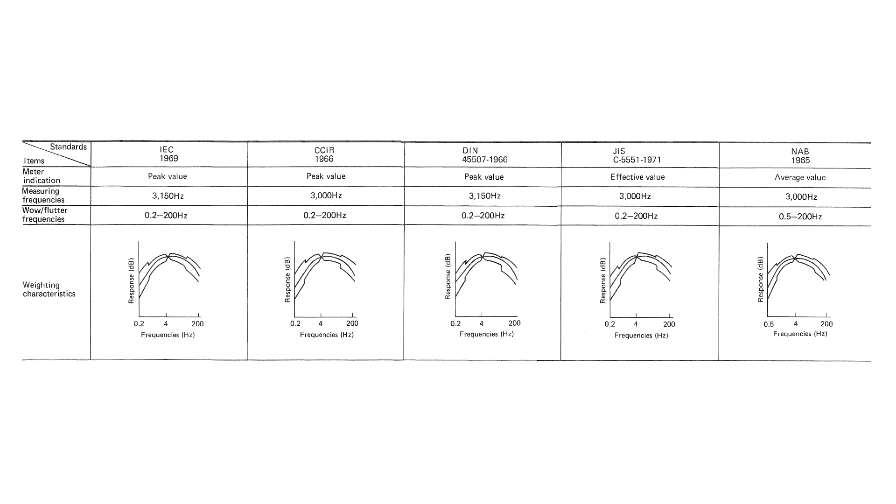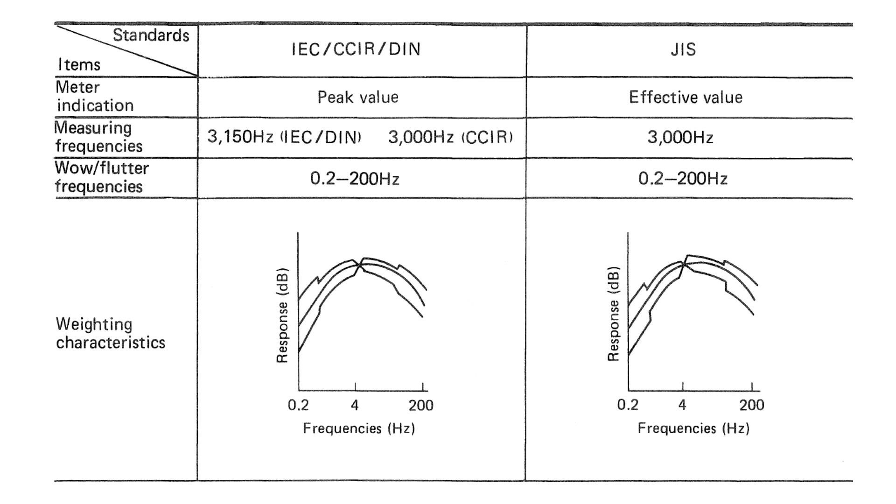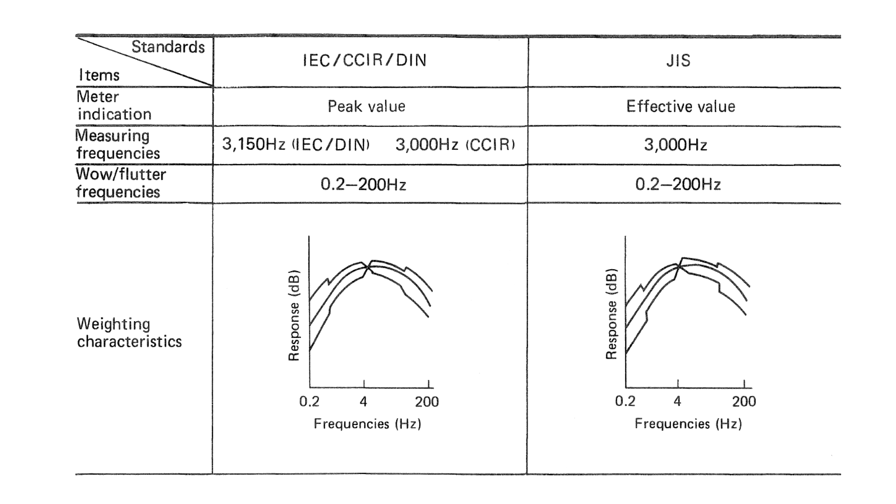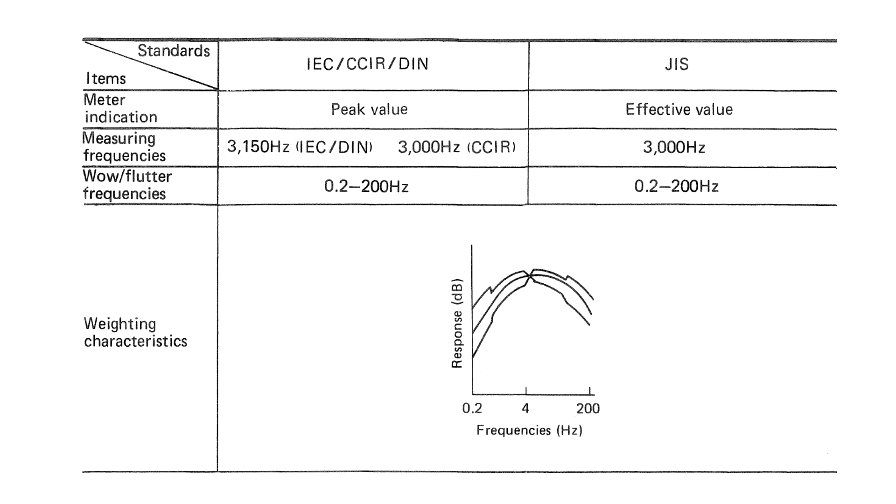By the end of the 1970s, the American NAB standard fell by the wayside. The IEC, CCIR and DIN standards became more homogenous. The JIS standard remained in use by Japanese manufacturers. So the industry effectively converged on two standards, European and Japanese. The major difference between them being the indication of measured value, quasi-peak or root-mean-square.